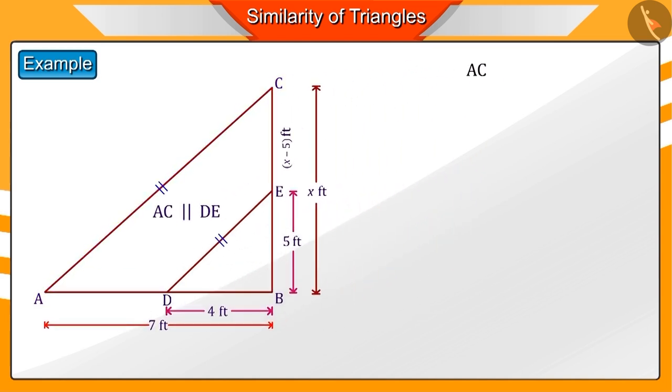In this triangle, sides AC and DE are parallel, hence the ratio of BE and EC would be equal to the ratio of BD and DA. Now, we substitute all the values.